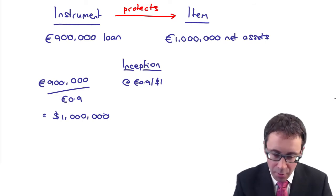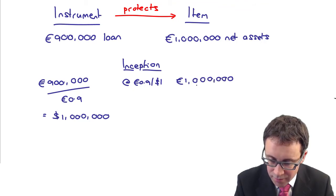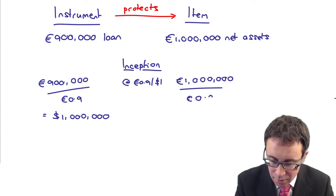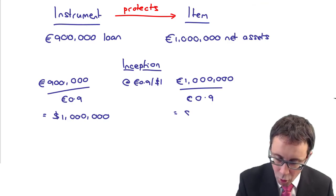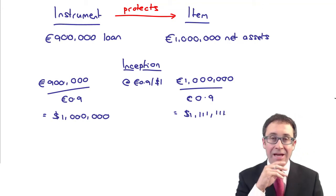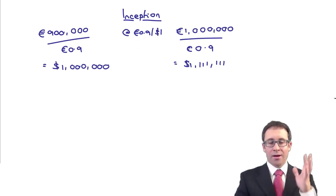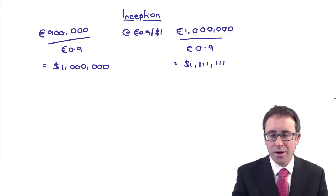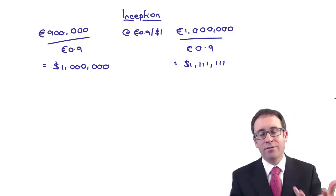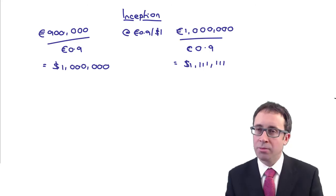For the item, we translate the one million euros of net assets at the rate of 0.9, which gives $1,111,111. As it stands, the hedge is not perfectly effective — the values don't correspond — because we've taken out a loan for a different amount than the value of the net assets. It will not always correspond.